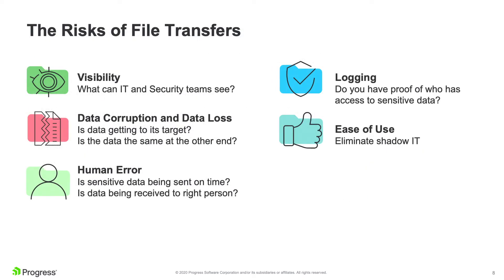The biggest risk we see is not only visibility, but things like data corruption or data loss where the file on disk is potentially unreadable — so we don't have any form of guaranteed delivery. It could even be where it's modified on disk. Not being able to ensure that the integrity of data is the same from the source system to the destination is a key component. Did anybody modify that in between? As far as human error, are we sending to the right person? Is it being delivered on time?